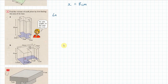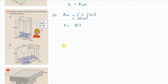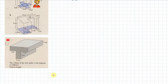For 4a, we find the volume by first finding the area of the base. Looking at the base, it's made up of little squares, each 2 by 2. There are 5 of those squares, so the area equals 5 times 4, which is 20 centimeters squared. The volume then equals the area times the height of the prism, giving 200 centimeters cubed.